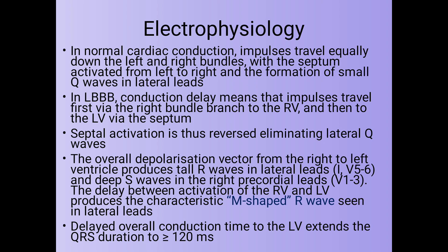Coming to the electrophysiology: in normal cardiac conduction, impulses travel equally down the left and right bundles, with the septum activated from left to right and formation of small Q waves in lateral leads. In Left Bundle Branch Block, conduction delay means impulses travel first via the right bundle branch to the right ventricle, and then to the left ventricle via the septum. Septal activation is thus reversed, eliminating the lateral Q waves.